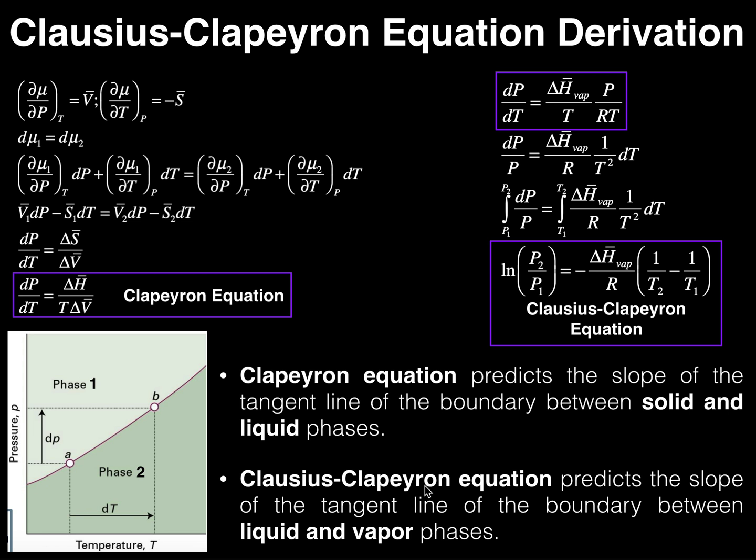We're now going to look at the derivation of the Clausius-Clapeyron equation. That's over here. It's going to use what we just had for the Clapeyron equation.